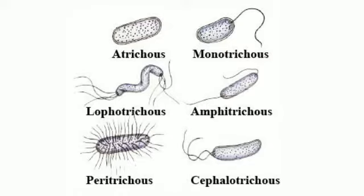On the basis of flagella, bacteria are of the following types. The first one is atrichous — when flagella are absent on a bacterial surface, they are said to be atrichous. Examples are Micrococcus and Pasteurella. The second one is monotrichous — mono means single. When one flagellum is present on one end of the bacterium, it is said to be monotrichous. Examples are Vibrio, Thiobacillus, and Pseudomonas.